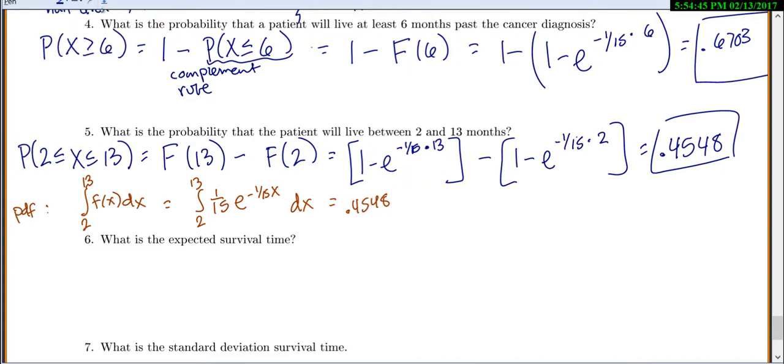What is our expected survival time? Or what would be the average survival time? Our formula says just 1 over lambda. So 1 over 1 over 15 gives me 15. So we expect, or the average is, that they'll live about 15 months.